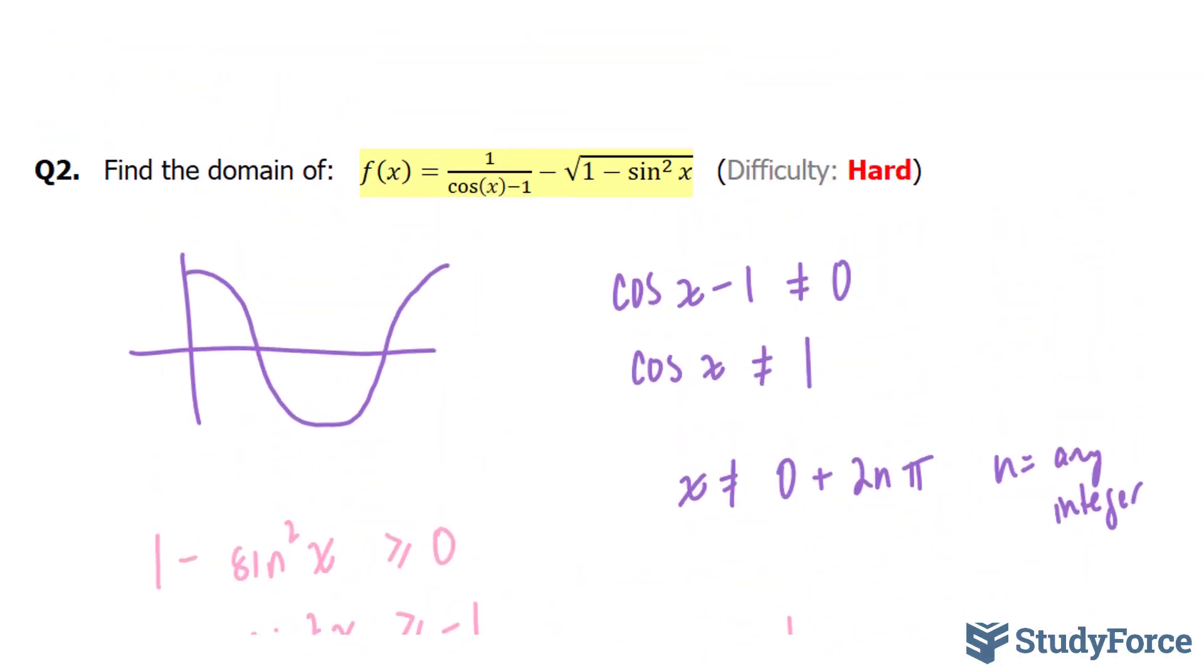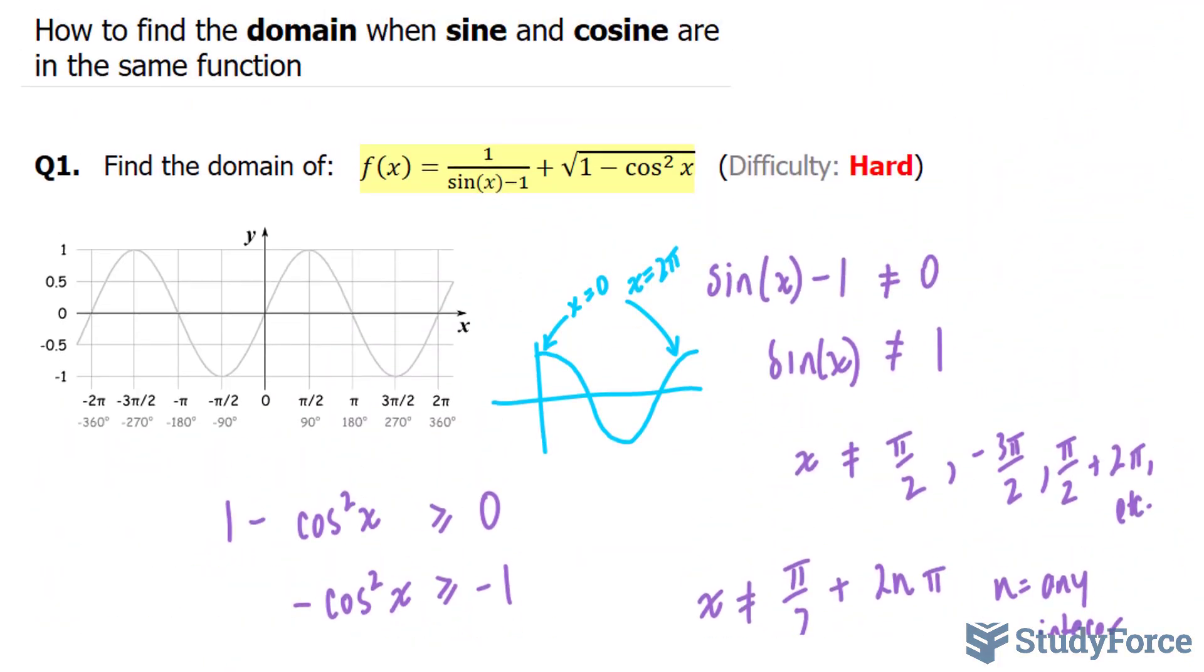And so there you have it. Two examples on how to find the domain of a function that includes both sine and cosine.